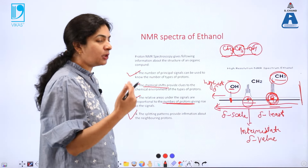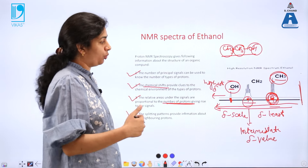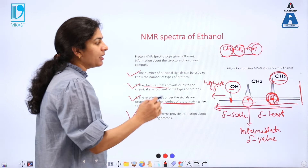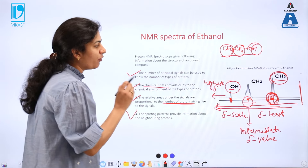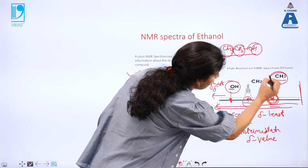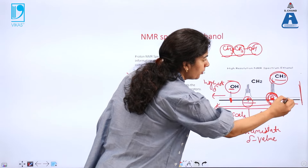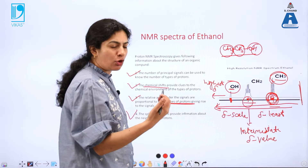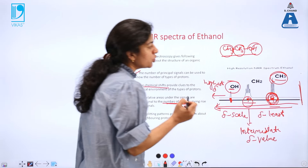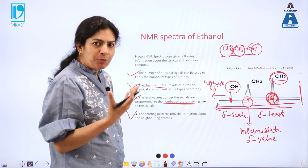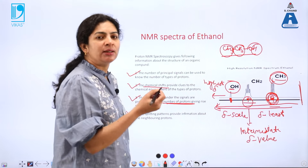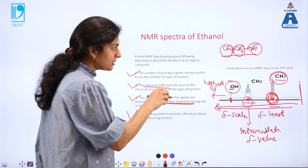Finally, we also get information about the neighboring nuclei. Direct nuclear information is given by the area under the curve, but the information about the neighboring nuclei is provided by the splitting pattern. As we can closely see, there are 3 peaks. In a high resolution spectra of ethanol, it is clearly shown that there are 3 peaks. This is known as the splitting pattern in NMR spectroscopy. This splitting is due to the neighboring nuclei which are present in the molecule.